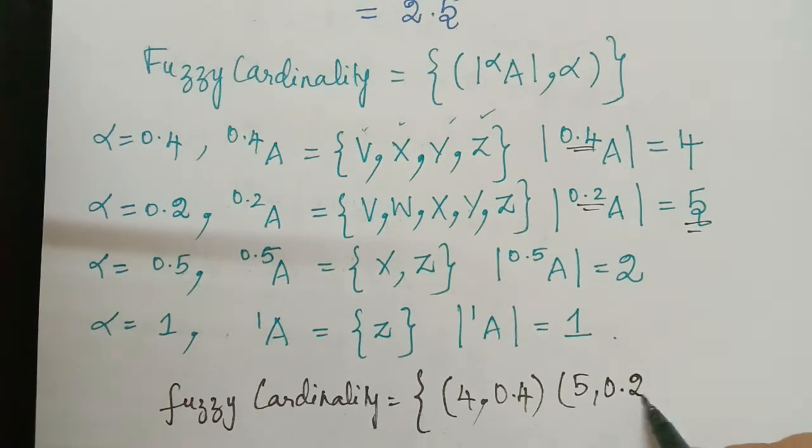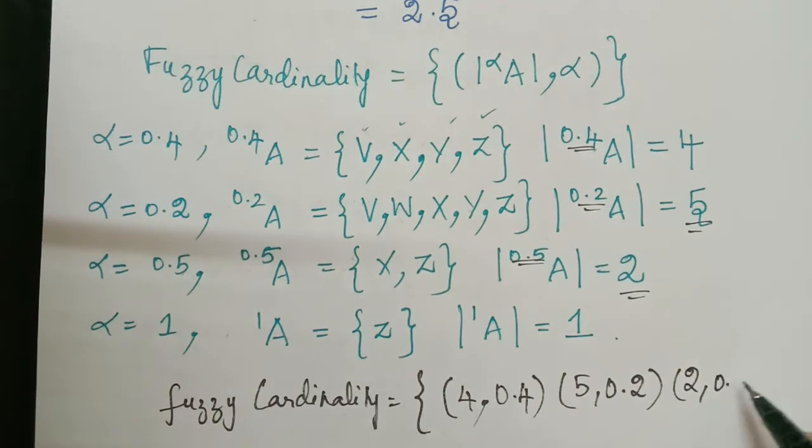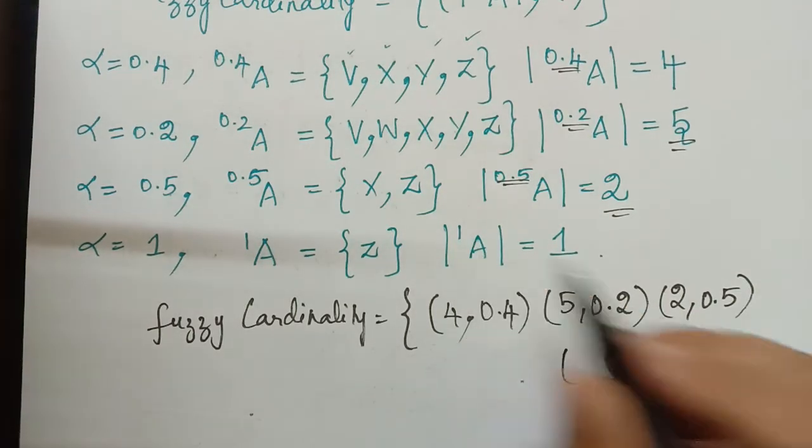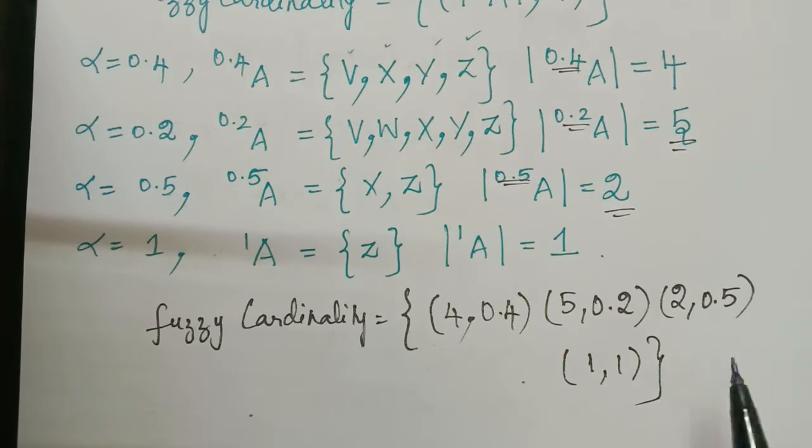And for next value of alpha 0.5 we have it as 2. So it will be 2 comma 0.5 and then finally we have for 1 which is 1 again. So 1 comma 1. So this is the fuzzy cardinality.